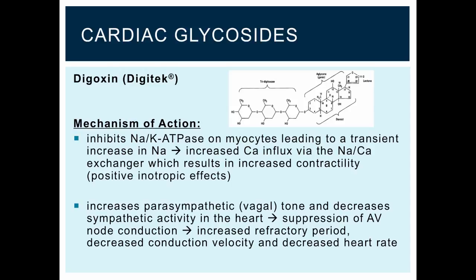By causing increased contractility, we get an increase in arterial pressure, an increase in contractile force and cardiac output, and this leads to a reflex decrease in sympathetic tone. These two taken together — the increase in parasympathetic or vagal tone and the decreased sympathetic activity — lead to suppression of atrioventricular node conduction, which in turn leads to increased refractory periods for the AV node, decreased conduction velocity through the AV node, and decreased heart rate.